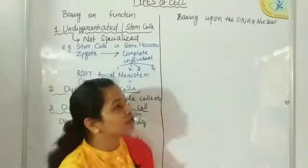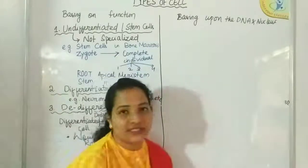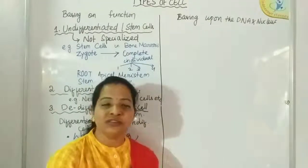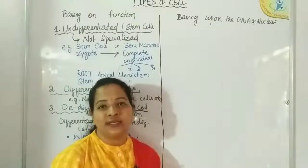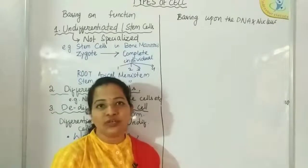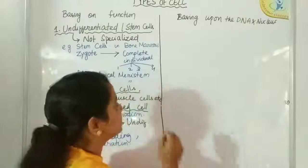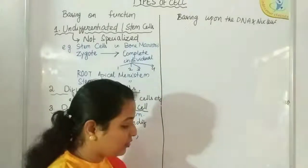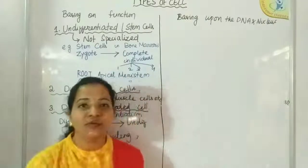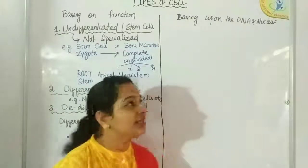Next, moving to the types of cells based on DNA and nucleus. There are cells not having a definite nucleus and not having DNA packed inside that nucleus — as there is no nucleus, there is no packed DNA inside. Those types of cells are called prokaryotic cells. Some other cells are there which have a definite nucleus with packed DNA inside it. Those are called eukaryotic cells.